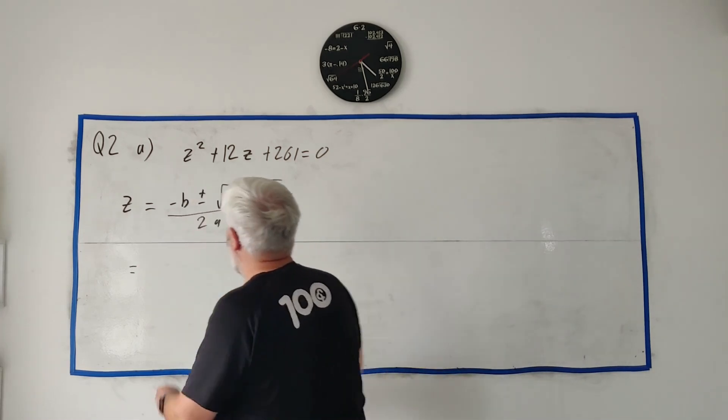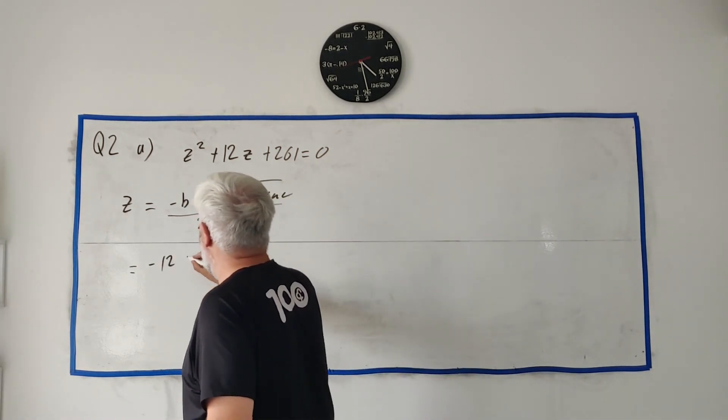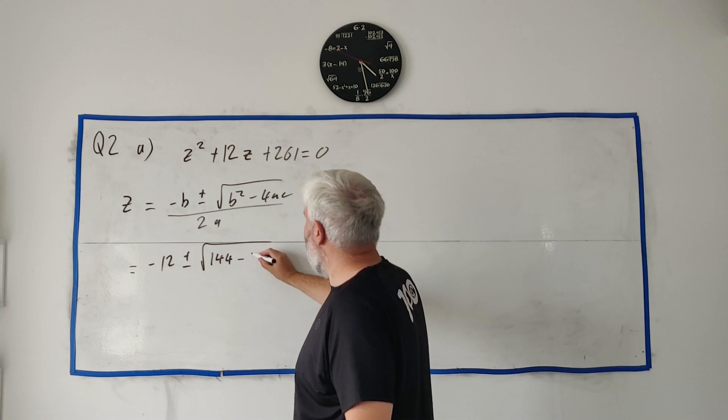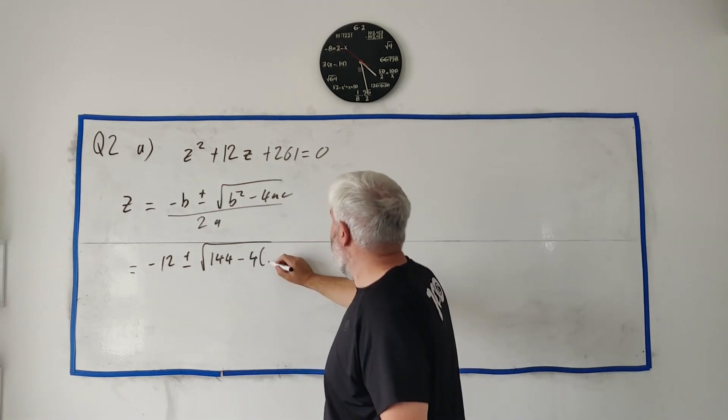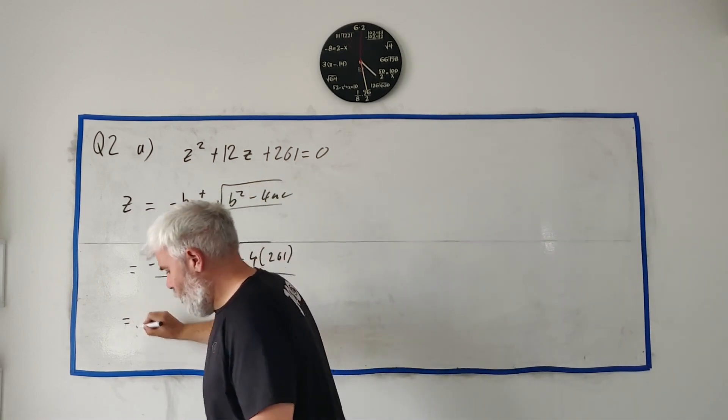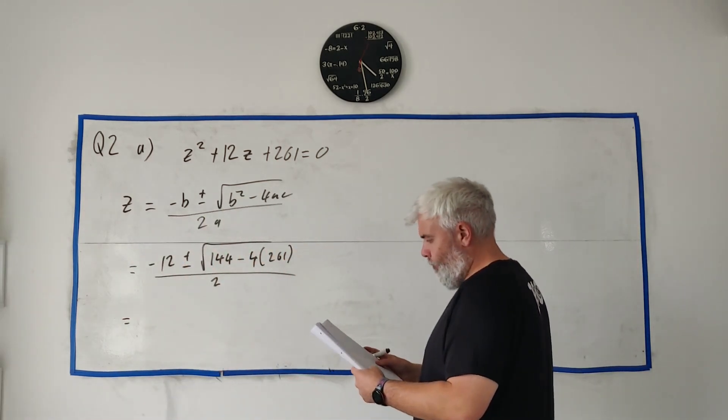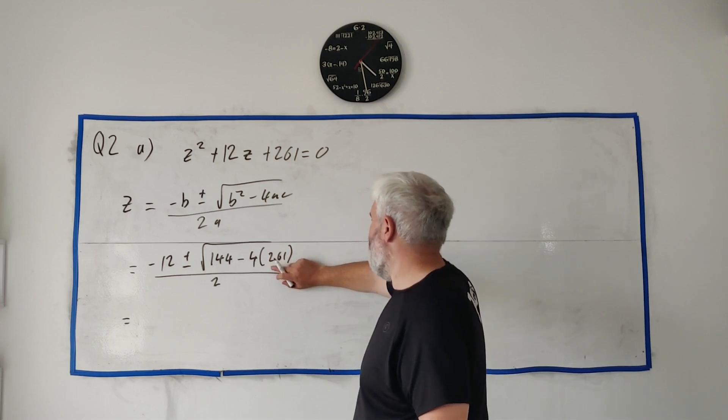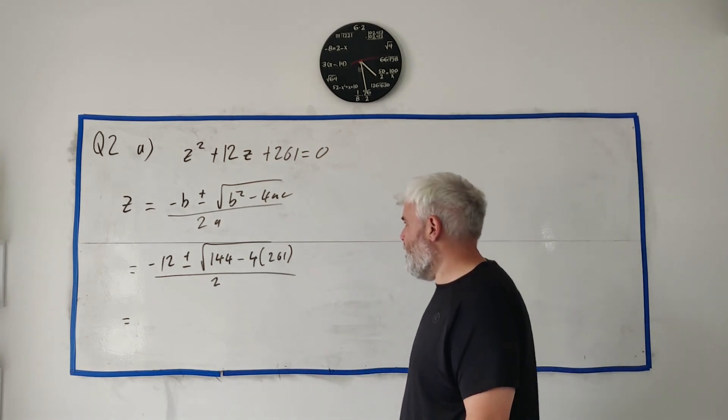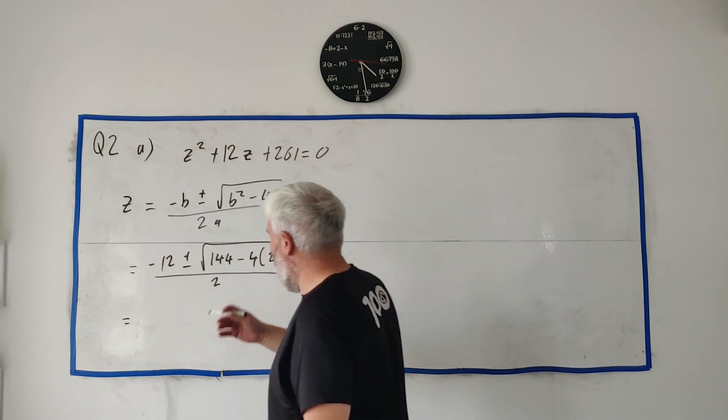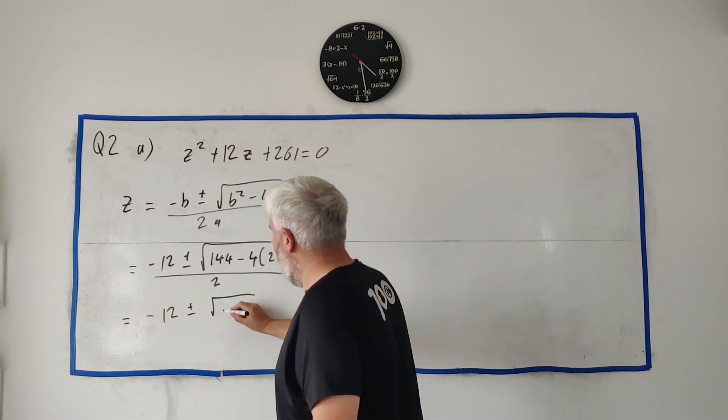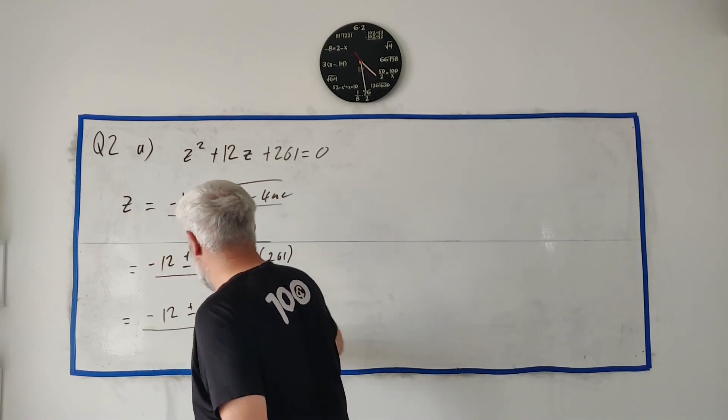So the minus B formula will tell us - let me write it out: minus B plus or minus square root B squared minus 4AC over 2A. In this case, B will be 12. So we'll get minus 12 plus or minus the square root of 144, that's 12 squared, minus 4 times 1 times 261 all over 2. So if we clean this up, 1,044 minus 144 is 900.